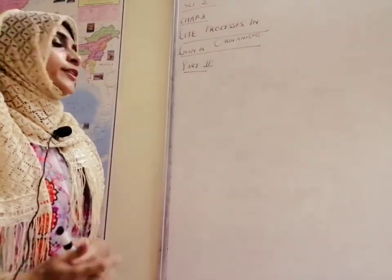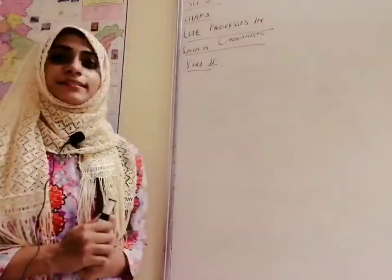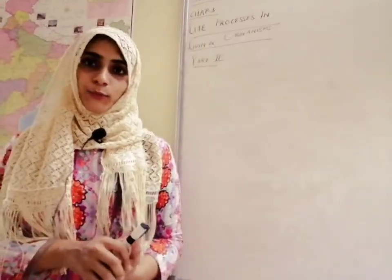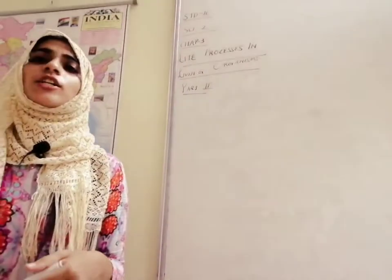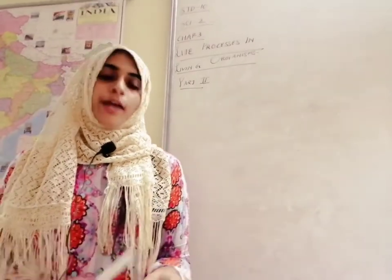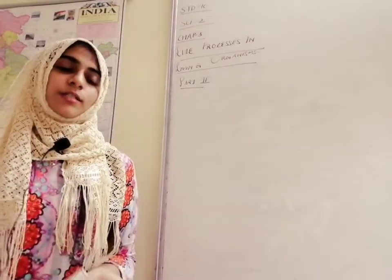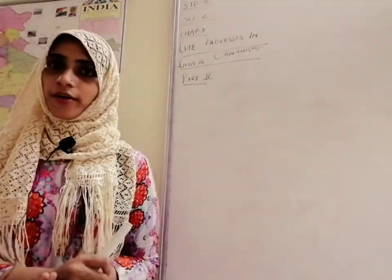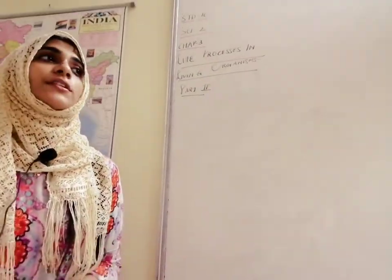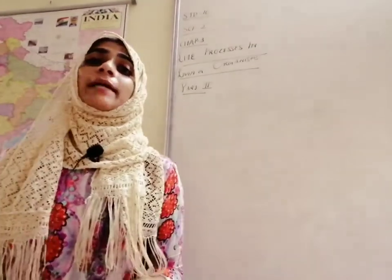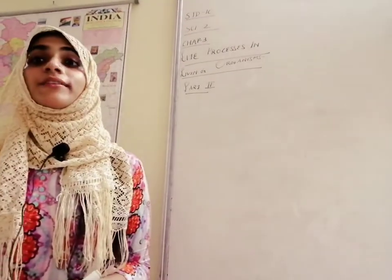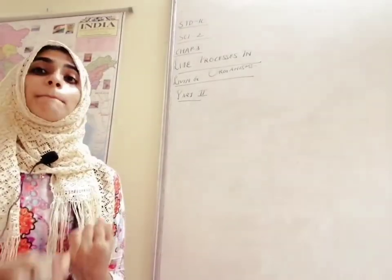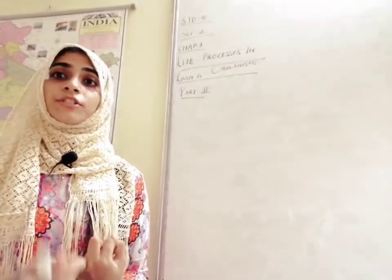Today we are going to continue with our chapter which we started last time: Life Processes in Living Organisms Part 2. In the last lecture we learnt about reproduction — what is reproduction, the difference between asexual and sexual reproduction, and the different types of asexual reproduction in unicellular organisms: binary fission, multiple fission, and budding.